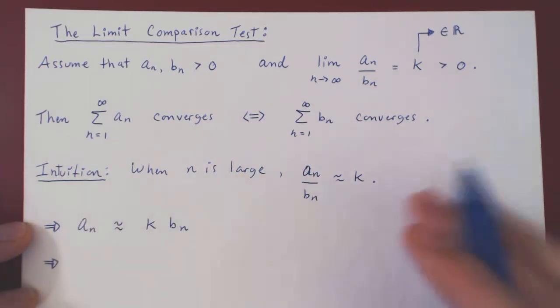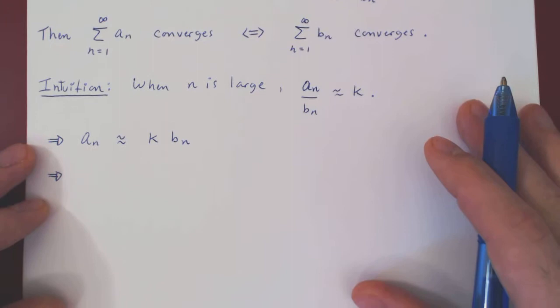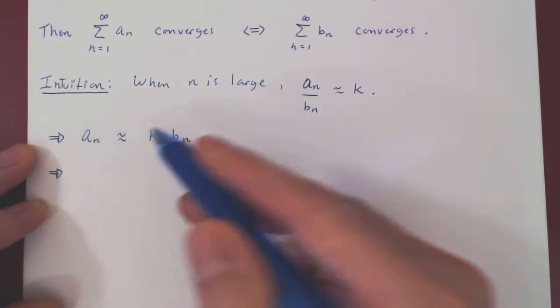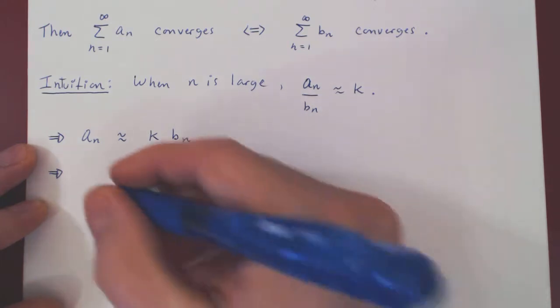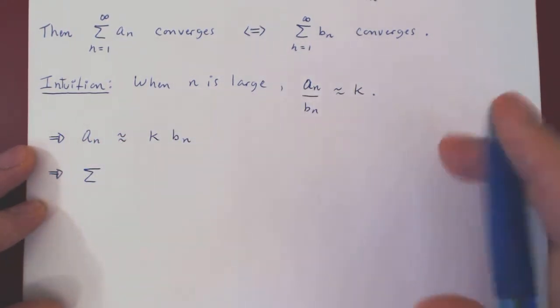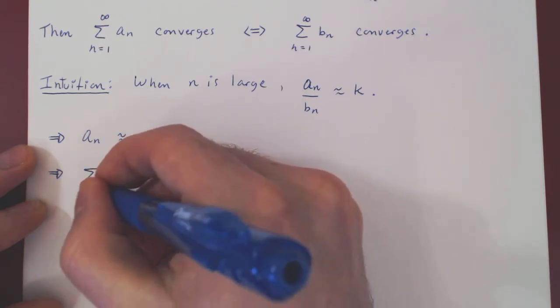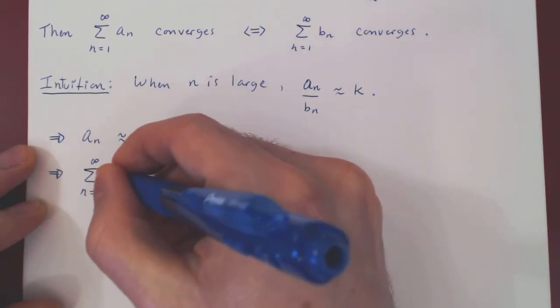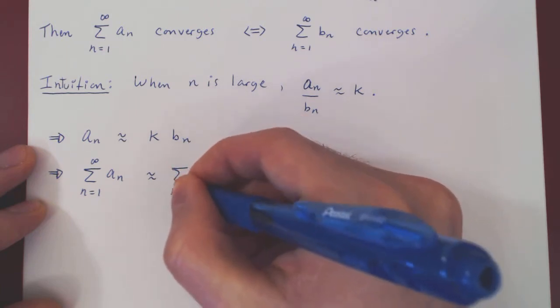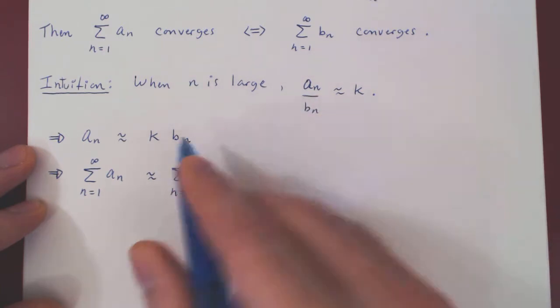Well, so we can now look at summing these terms. If these terms are roughly these terms for every n, when n is large, that means that roughly, when we sum the terms from the sequence an, it should be roughly summing these terms.